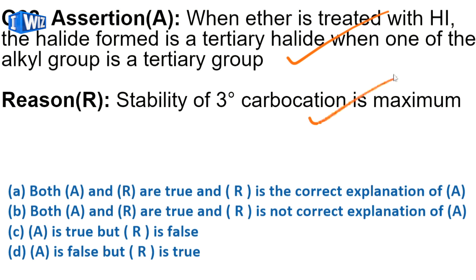Stability of tertiary carbocation is maximum. This is also true and this is the correct explanation that tertiary halide is formed because SN1 reaction is followed, and for SN1 reaction tertiary carbocation is more stable. So A is the correct answer - both assertion and reason are correct and reason is correct explanation of assertion.